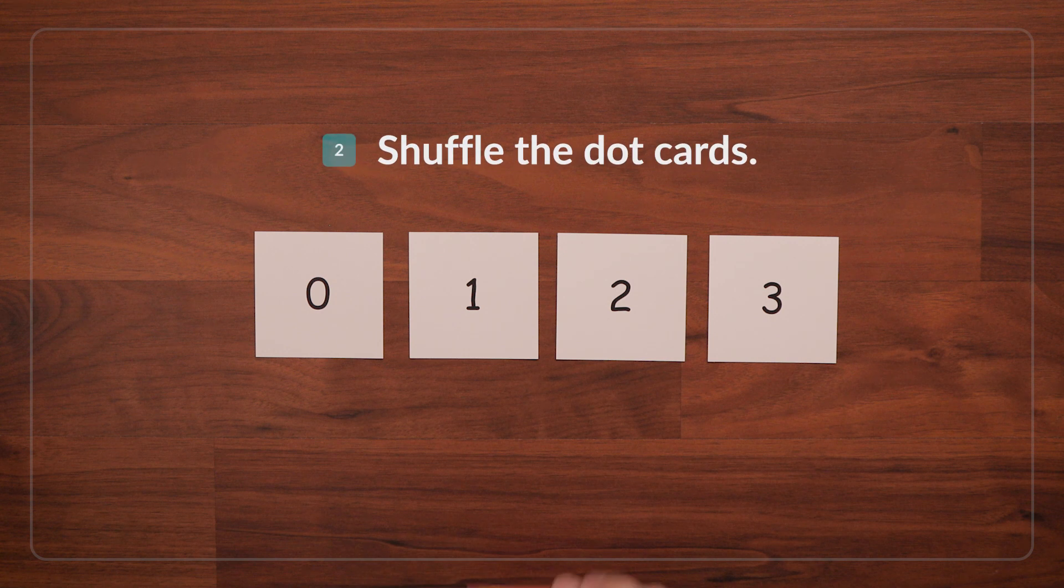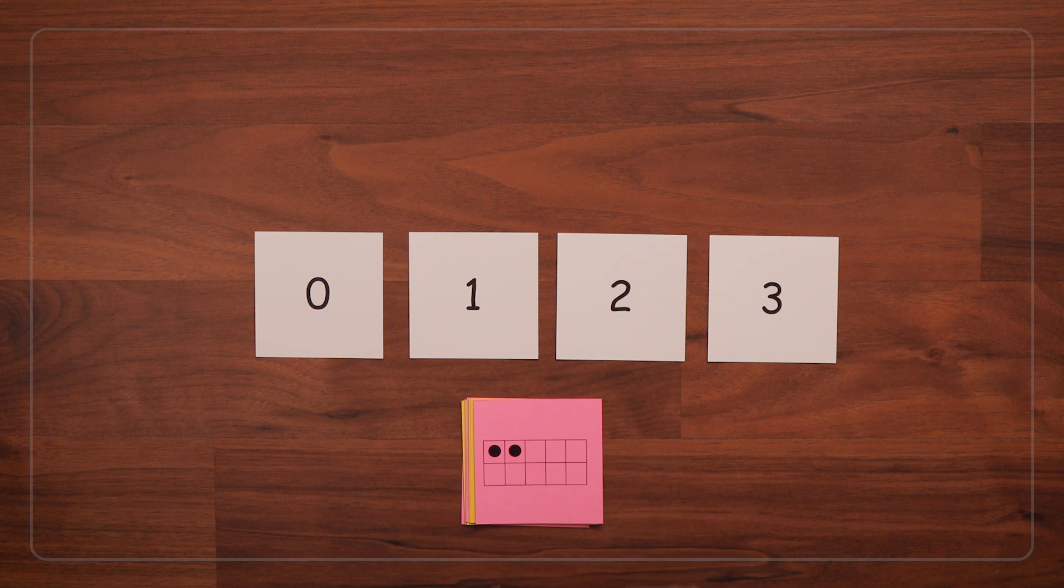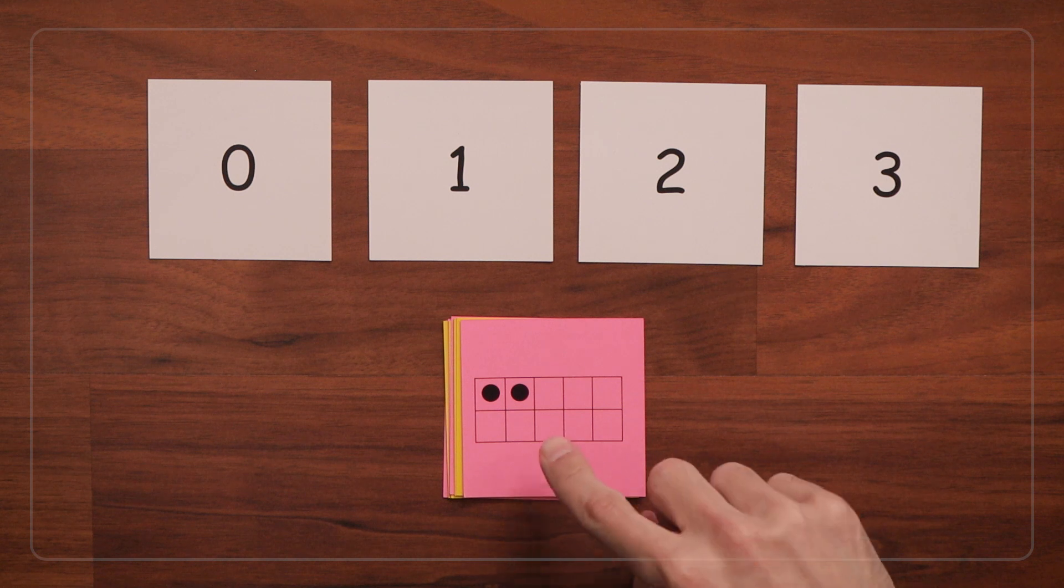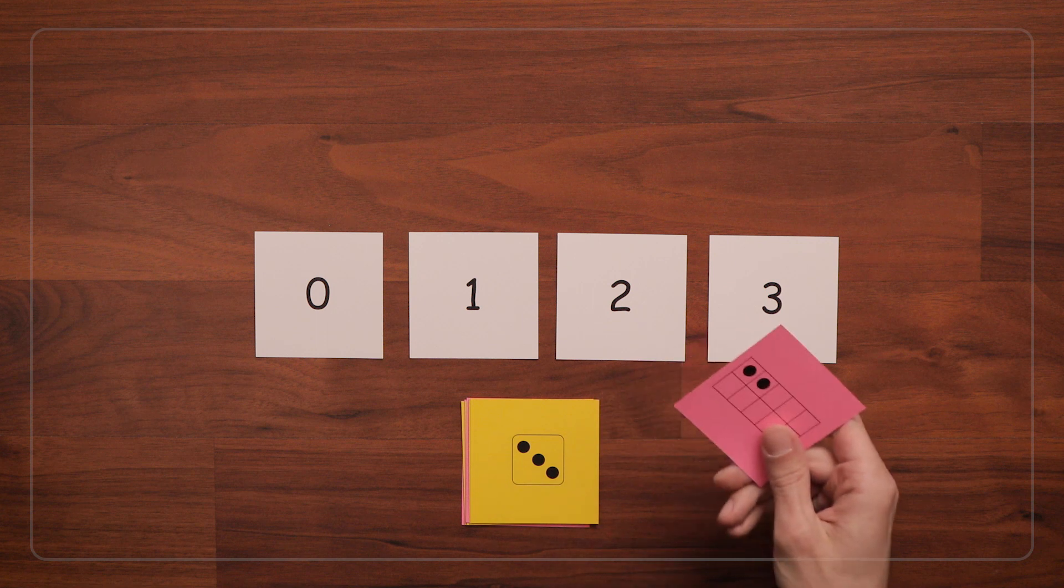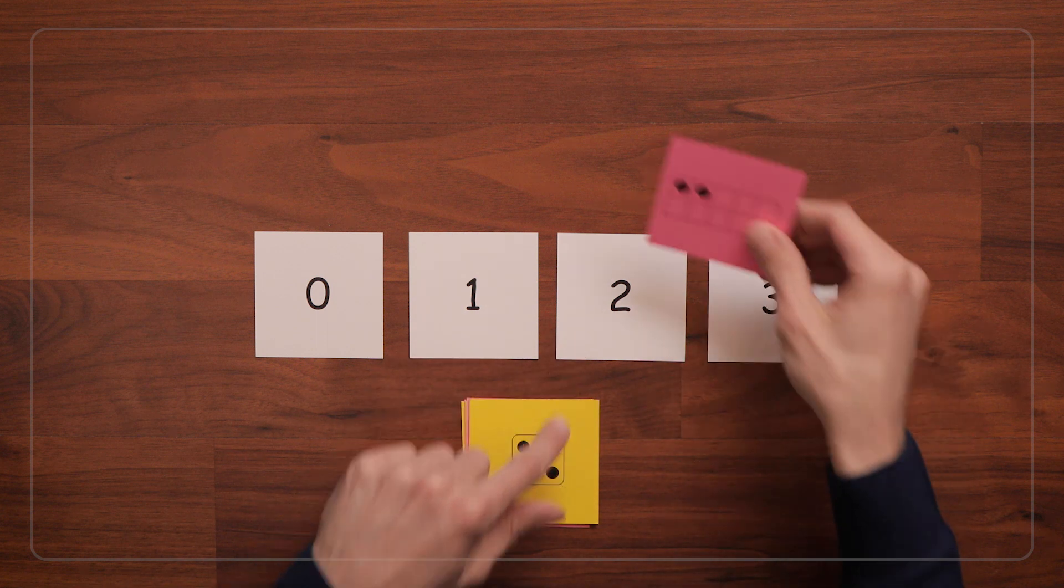Then shuffle your dot cards and say, let's look at the top card in the pile. How many dots are there? Yes, there are two dots. One, two. Let's put this card above the numeral two card to be eaten.